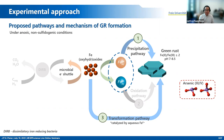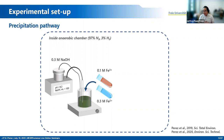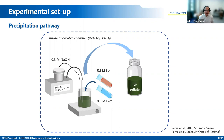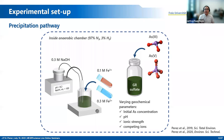For this presentation, I will focus on the precipitation and transformation pathway. For the precipitation pathway, I do all my experiments inside an anaerobic chamber or glove box, wherein the atmosphere is composed of 97% nitrogen and 3% hydrogen. Hydrogen is there to scrub all of the oxygen that might penetrate the glove box through a palladium-alumina catalyst. I start by synthesizing green rust by combining iron(II) and iron(III) solutions — with iron(II) in excess — then add sodium hydroxide until a pH of around 8. Once the green rust is formed, I add arsenic(III) or arsenic(V) and vary several geochemical parameters such as initial arsenic concentration, pH, ionic strength, and competing ions.